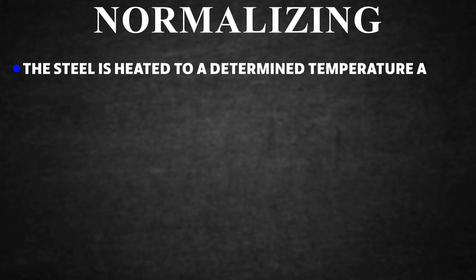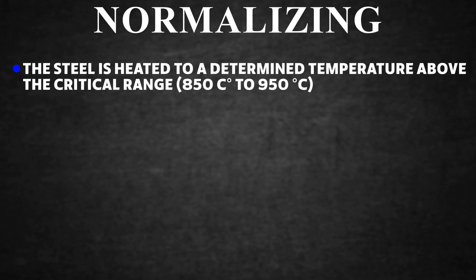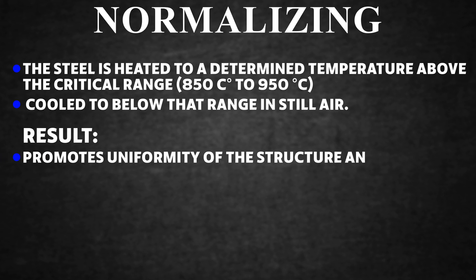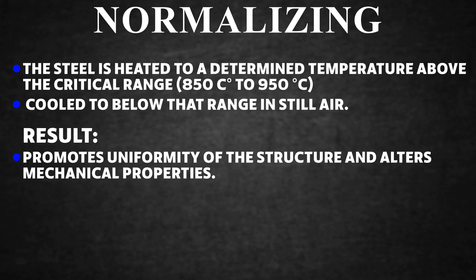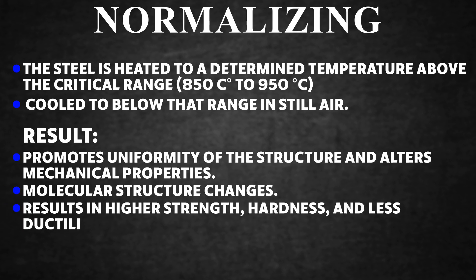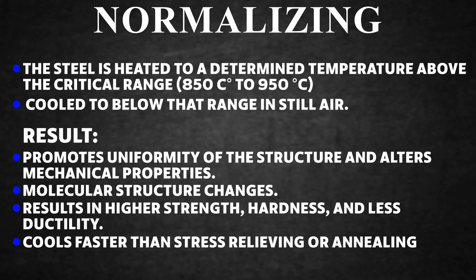Normalizing. The steel is heated to a determined temperature above the critical range — 850°C to 950°C — then cooled below that range in still air. The result is that normalizing promotes uniformity of structure and alters mechanical properties. It produces molecular structure changes resulting in higher strength, hardness, and less ductility, and cools faster than stress relieving or annealing.